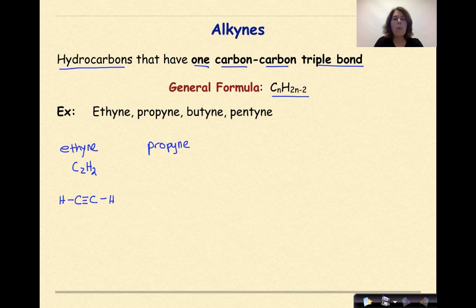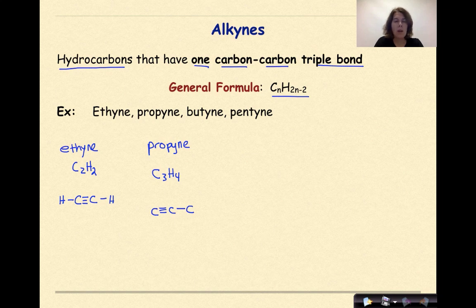Let's go on to propyne. 'Prop' means three, so C3H4 — that's 2×3-2=4. This one always looks bizarre because it doesn't seem like we'll have enough hydrogens. Drawing three carbons, with a triple bond on one end, a single bond between the other two. The left carbon needs one more bond; the middle carbon already has its four bonds; the right carbon needs three more. Filling in four hydrogens — it's like magic. I have just created propyne.